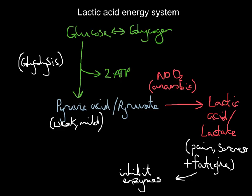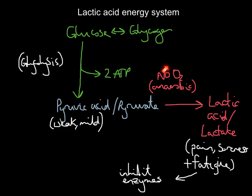To summarize: one molecule of glucose from glycogen is broken down via glycolysis, releasing energy for two ATP. This also produces pyruvic acid or pyruvate, and when there is no oxygen available — as in the lactic acid system — that pyruvate converts to lactic acid or lactate, creating pain, soreness, and fatigue.